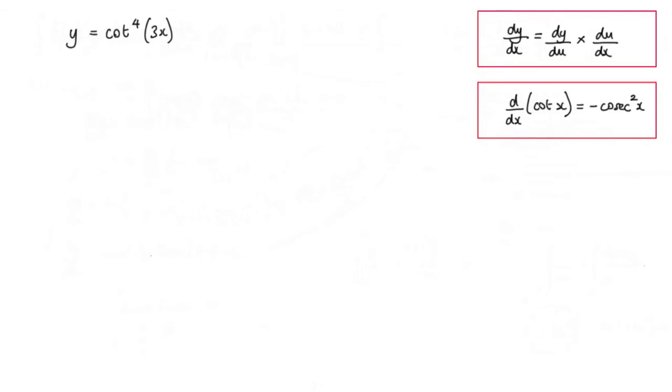In this question we're asked to differentiate y, where y is cot to the fourth power of 3x. A couple of rules would be handy here. The first one is the chain rule, and the second one is knowing that the differential of cot x is negative cosec squared x.